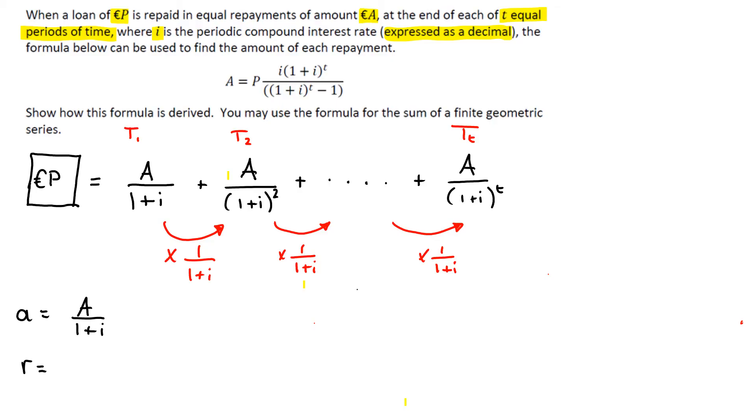The next thing is R, the common ratio, which is 1 over 1 plus I. And the third thing that's really important that you know is N, which is equal to T.